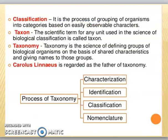Next we have classification. This is a process where we categorize organisms on the basis of their characters and similarities. We start to classify organisms by grouping them based on shared characteristics. The scientific term used for a unit of biological classification is called a taxon.